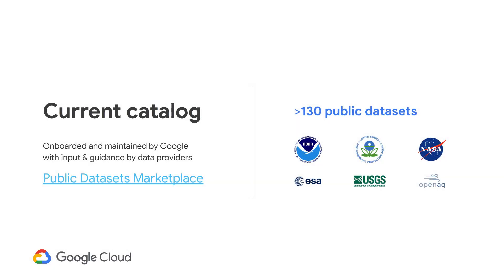We currently have more than 130 datasets in the Public Datasets program. These datasets are onboarded and maintained by Googlers, with input and guidance from data providers. You can see here a sample of our weather and climate data providers, including NOAA, NASA, the European Space Agency, and the U.S. Geological Survey, among others.